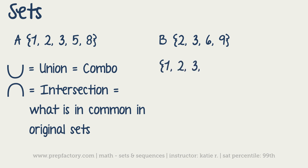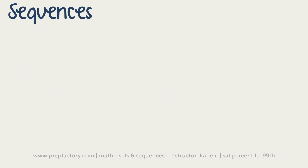The intersection of the sets is just what you have in common. You've got a two in both sets and also a three in both sets, so the intersection is just {2, 3}. To summarize: union is everything put together without repeating; intersection is all the stuff that was repeating — the shared elements.